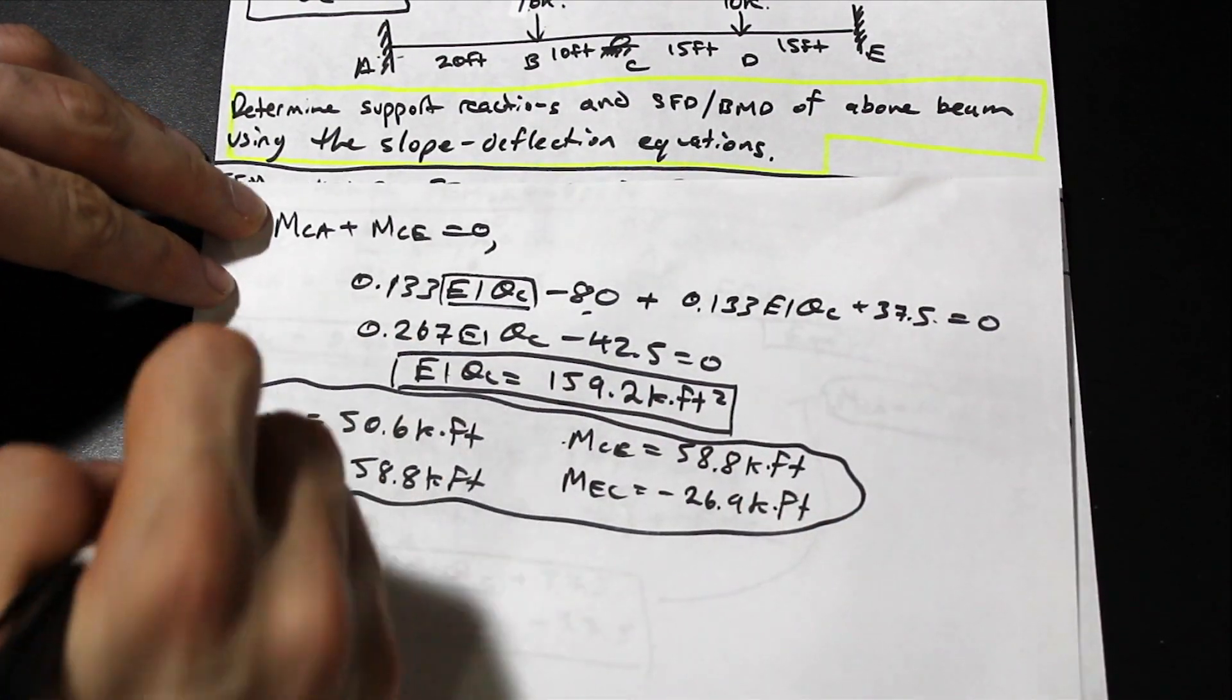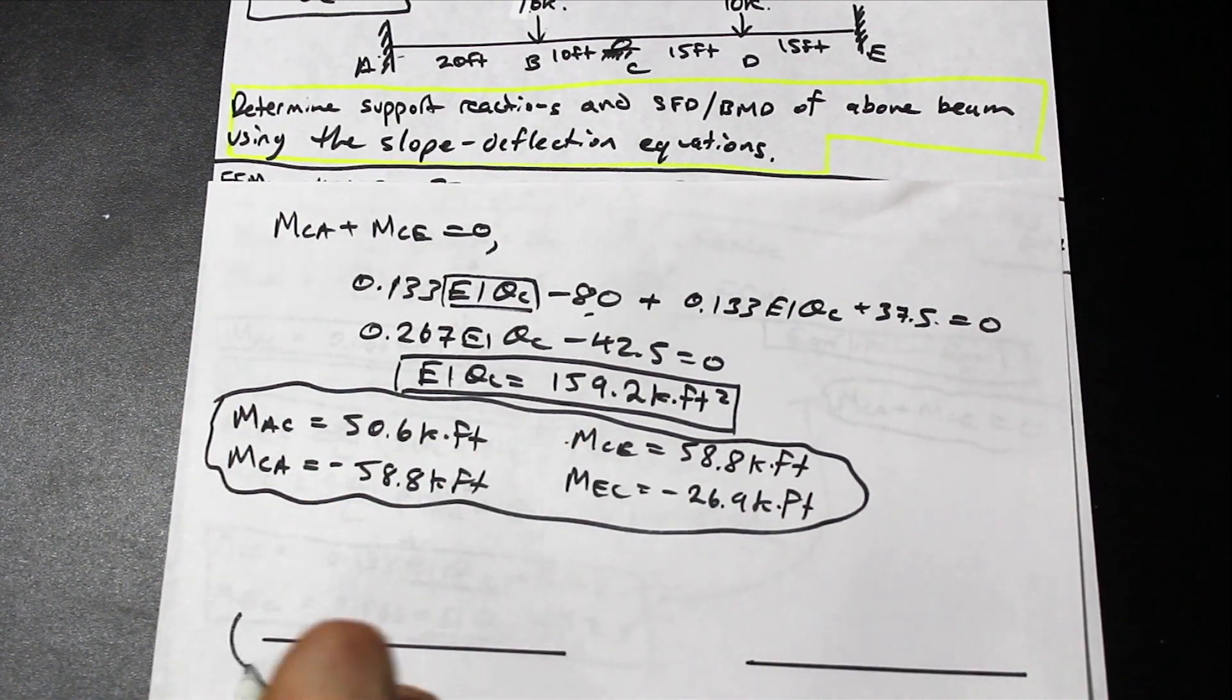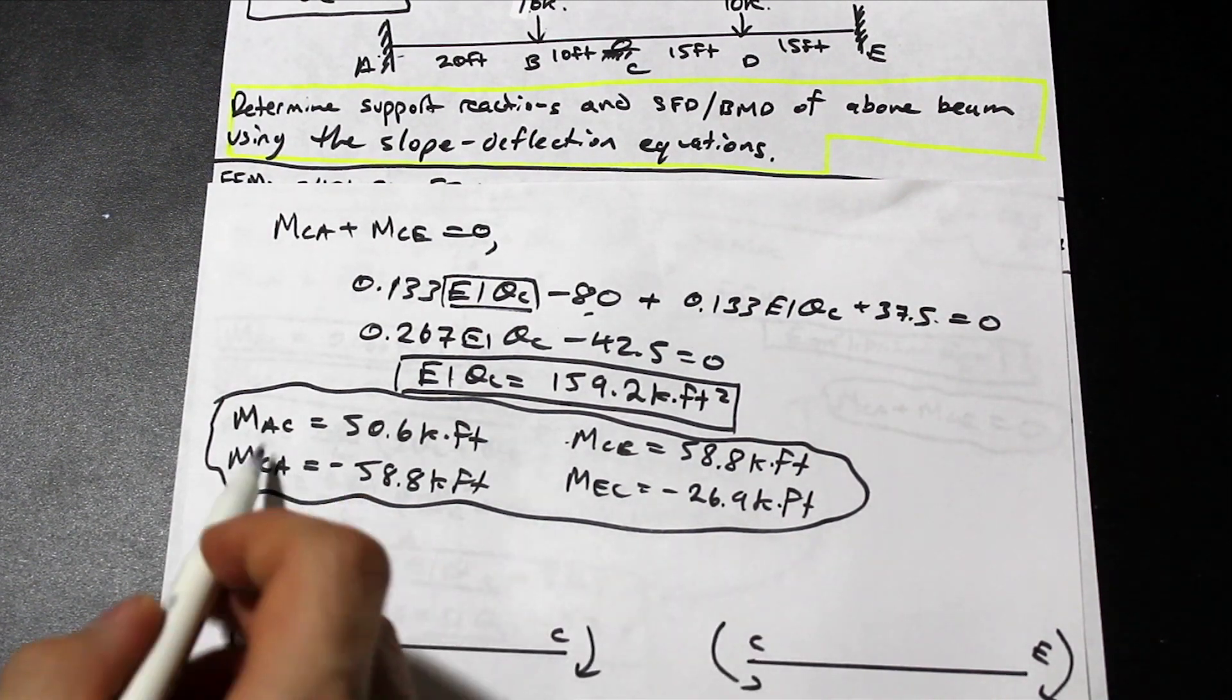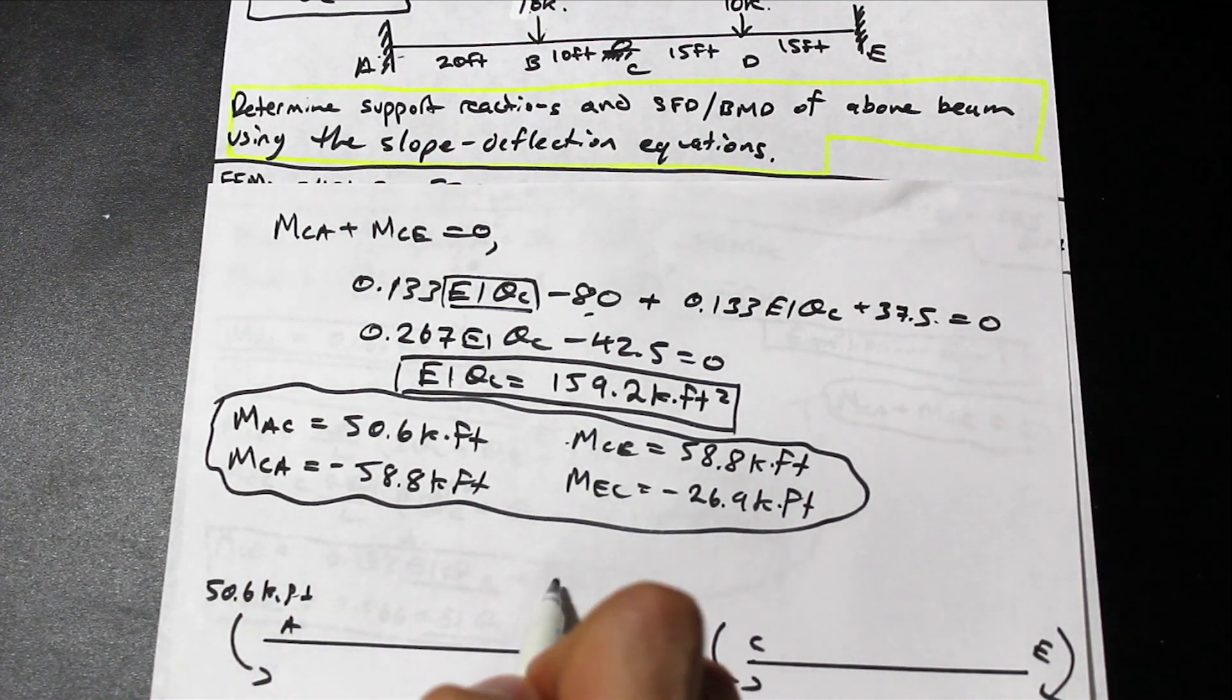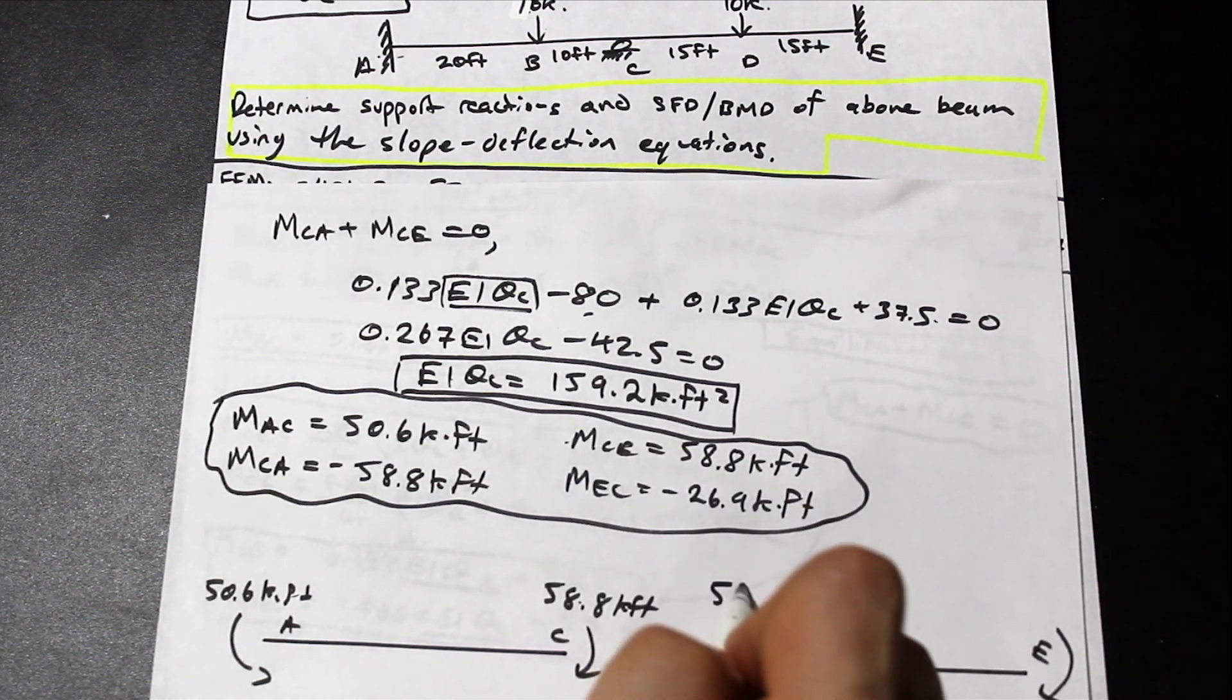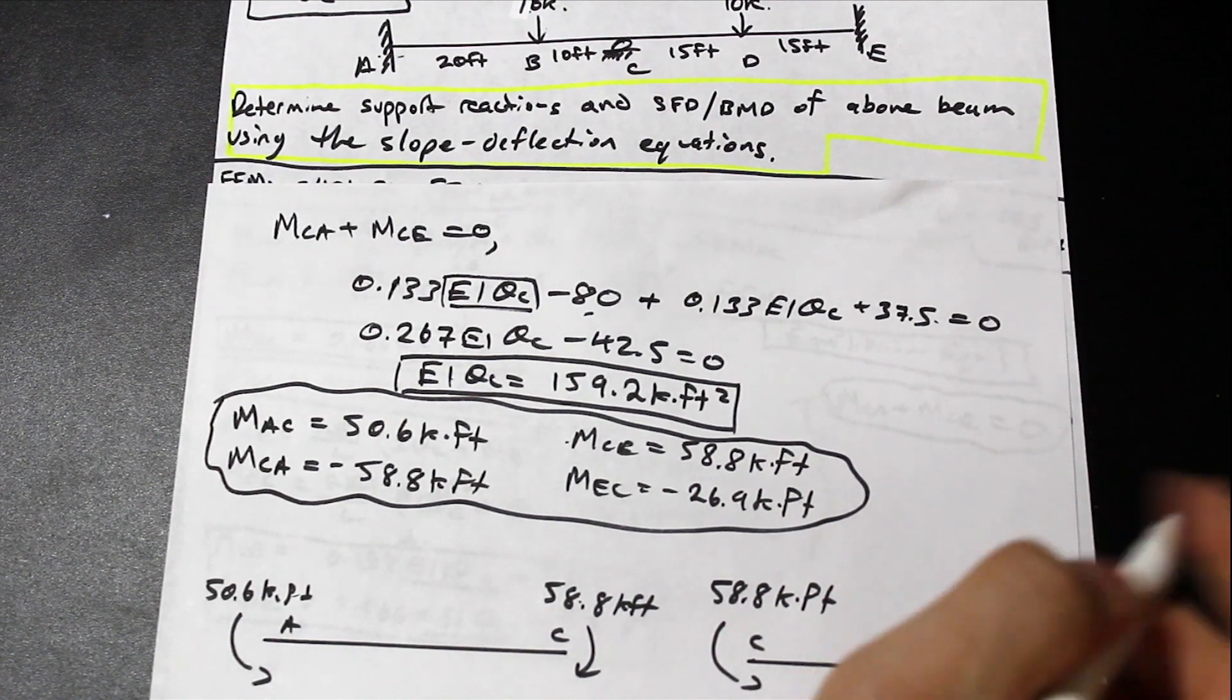So here we have the member end moments, all right, and if we go ahead and we just start to draw these out, this is what it's going to look like. So we have our AC, so if you remember, this was AC CE. So we're going to have what looks like, we have a 50.6 kip foot moment, we have a negative because it's counterclockwise, we have 58.8 kip foot. This moment here is going to be CE, that's 58.8, and as you'll see here, right, the moments here are equal and opposite, which they must be because it's a roller, and we have 26.9 kip feet here.